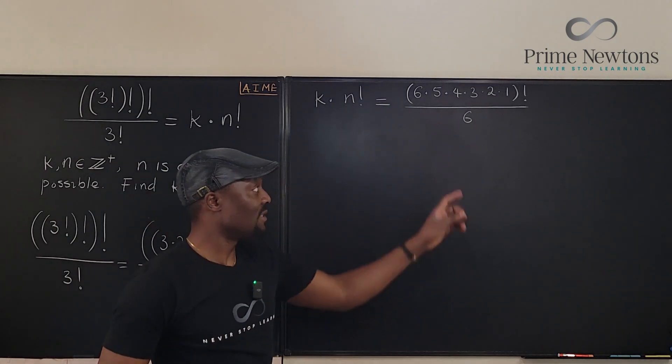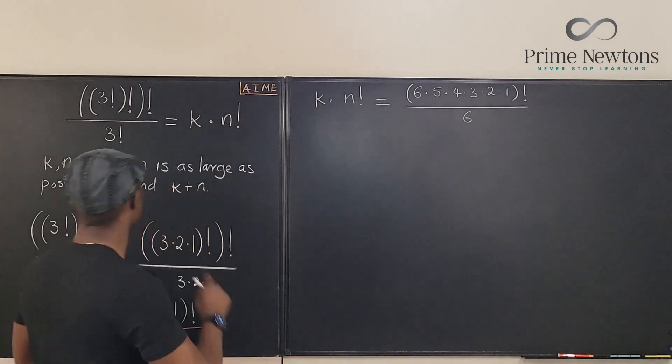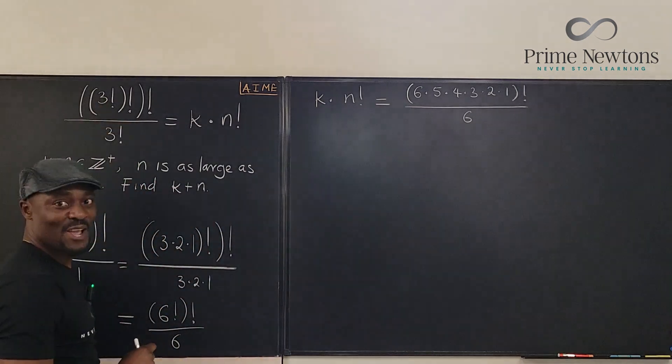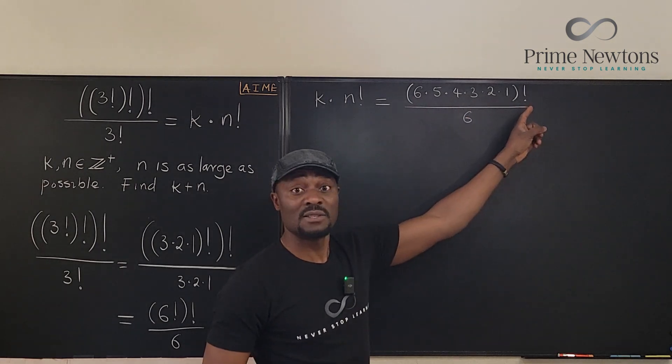Now, be careful, don't be tempted to go in and start canceling 6. No, don't do it. Because we could as well have canceled 3 factorial inside. But you can't go inside the parentheses, okay? So, at this point, we need to multiply this number out.